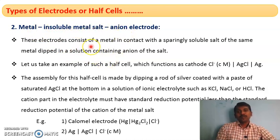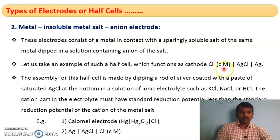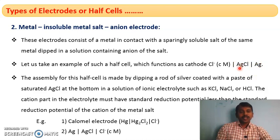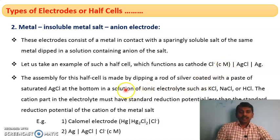The composition of a metal insoluble metal salt anion electrode: for example, the silver/silver chloride electrode. The cathodic representation is Cl⁻(C) | AgCl | Ag. Cl⁻ is the anion in the electrolytic solution at concentration C moles, and AgCl is the insoluble metal salt of silver. Silver metal is in contact with silver chloride, dipped in a solution containing Cl⁻ — this is an example of a metal insoluble metal salt anion electrode.